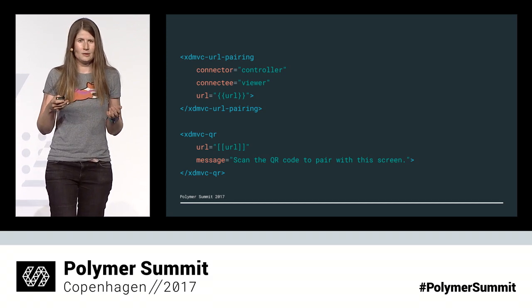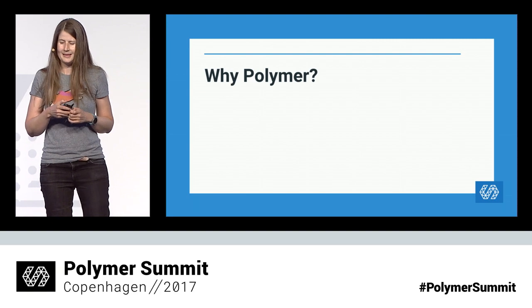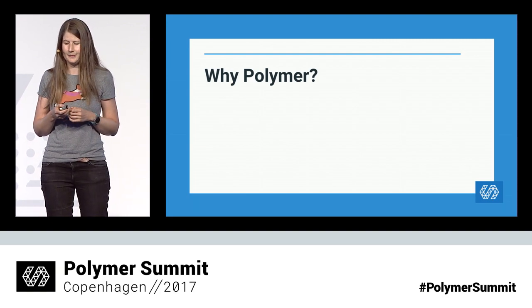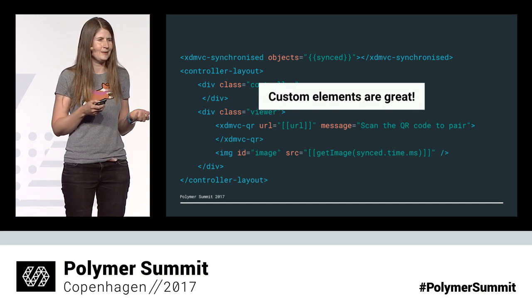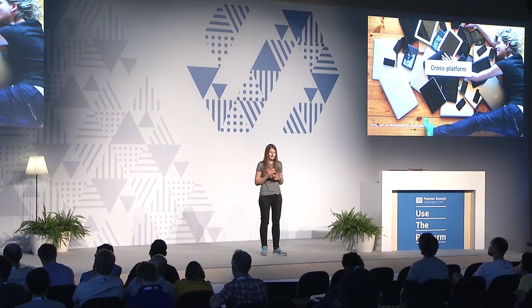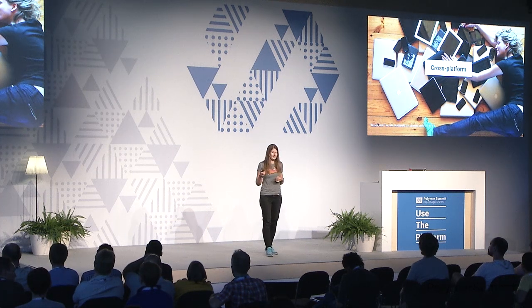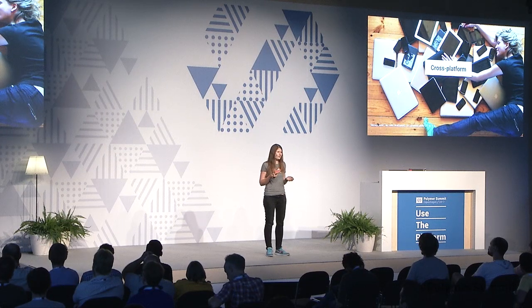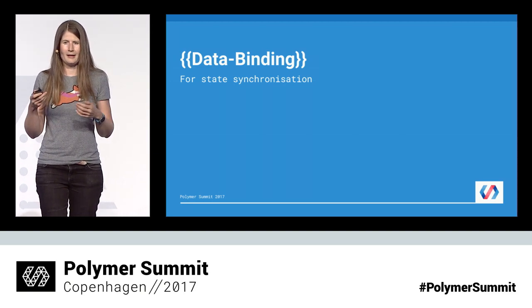If you don't need this pairing information in your application, you don't have to use it. So I've shown you how to build the application. Next, I'll speak about why we chose to work with Polymer. I think custom elements are great — declarative code is very readable, and I can get a quick overview of an application just by looking at the HTML. It was also important for us to have code that works across platforms and on all kinds of devices. We want code we can write once and run everywhere, and Polymer meets that requirement.